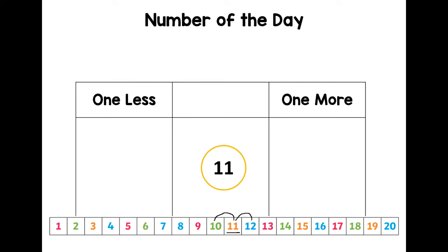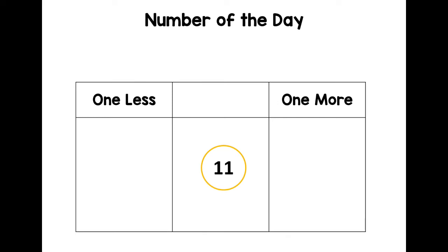I'm going to make that disappear, and the number track too. Can you remember the number that is one less than 11? It comes just before 11 on the number track. Oh yes, number 10. So that's one less. But what's one more? If you have 11 and then you're given one more, how many do you have now? Twelve, well done.